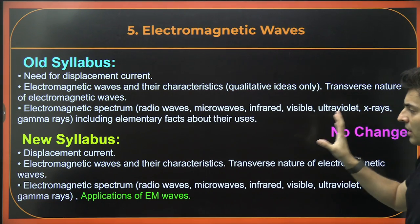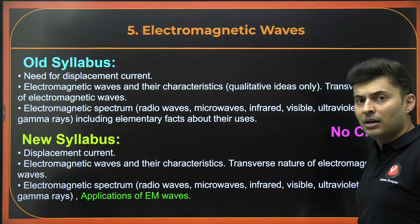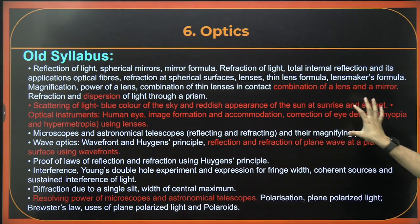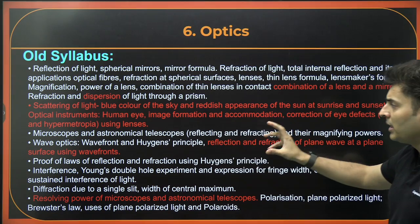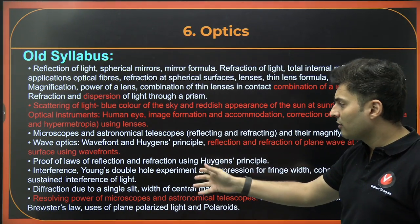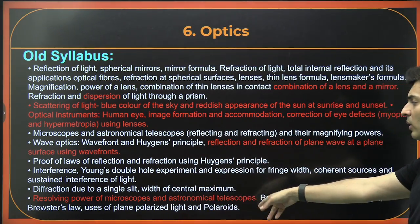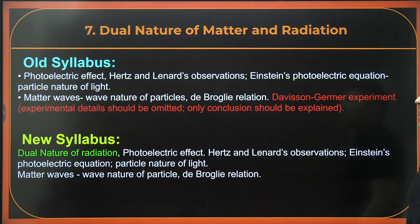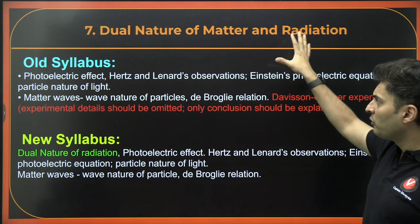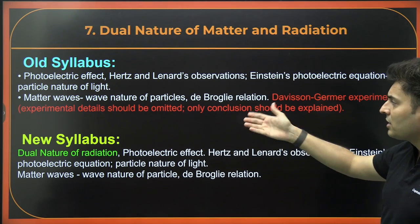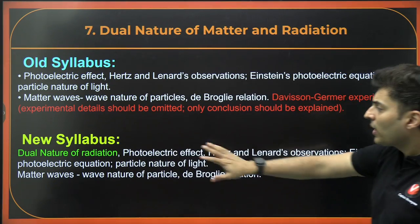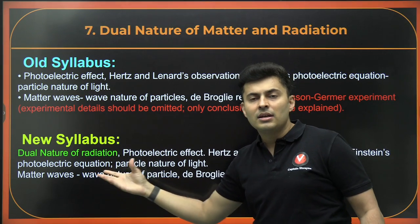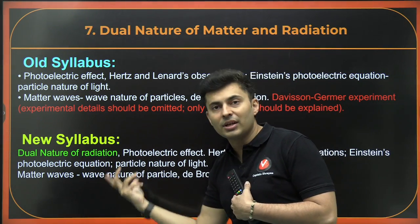In EM Waves, there is no change as to what has been removed, but applications of EM waves is mentioned in NCERT — please read through that. In Optics, many things have been removed: combination of lenses with mirrors, dispersion, scattering of light, the blue color of the sky, correction of the eye, human eye defects, reflection and refraction of waves using wavefronts — that is Huygens' principle — and resolving power of the microscope and telescope. Nothing new has been added in optics. In Dual Nature of Radiation, the Davisson-Germer experiment has been removed from the old syllabus, while dual nature of radiation has been added in the new syllabus. However, this is not really something new because De Broglie wavelength was already there, and that is essentially the dual nature of radiation — it's just mentioned differently.